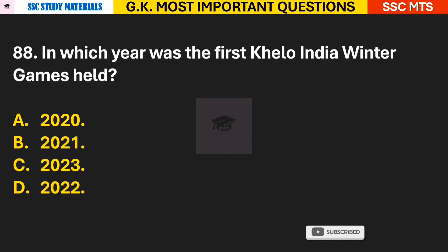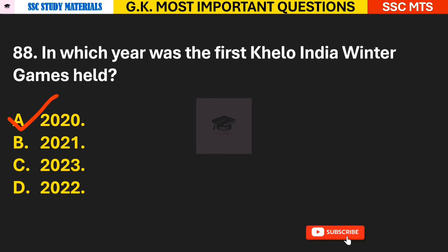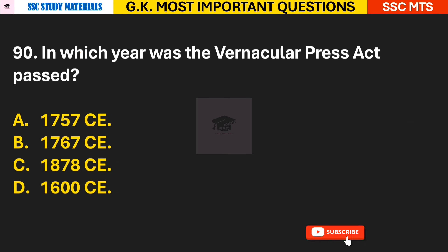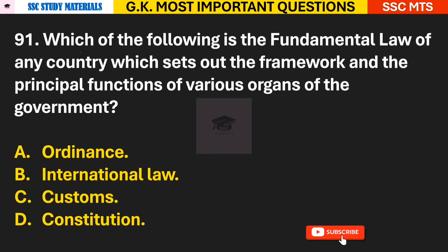Question 88: In which year was the first Khelo India Winter Games held? Answer A — it was held in 2020. Question 89: Which state of India is associated with the famous thunderstorm Kal Baisakhi? Answer B — West Bengal. Question 90: In which year was the Vernacular Press Act passed? Answer C — it was passed in 1878 CE.